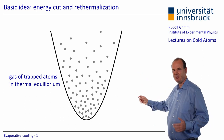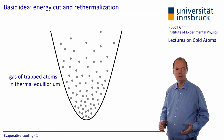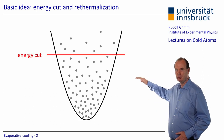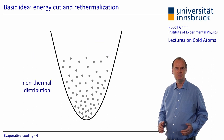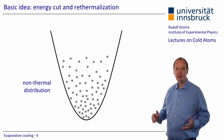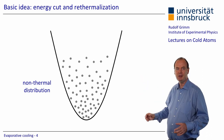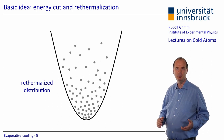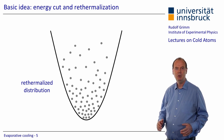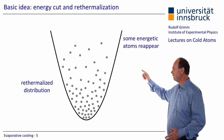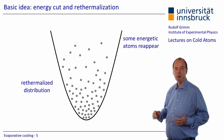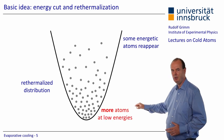Let's start with a gas of trapped atoms in thermal equilibrium. Now we apply an energy cut — that means we remove all atoms with energies exceeding a certain threshold. This obviously results in a non-thermal distribution. Now we wait some time without applying the energy cut so that many elastic collisions can take place and re-establish thermal equilibrium. The total energy does not change in this re-thermalization process, but the energy distribution again becomes a thermal one. This makes some energetic atoms reappear and most importantly produces more atoms at low energies.